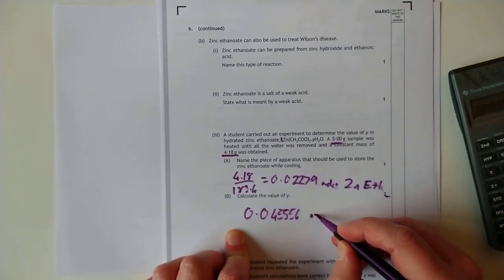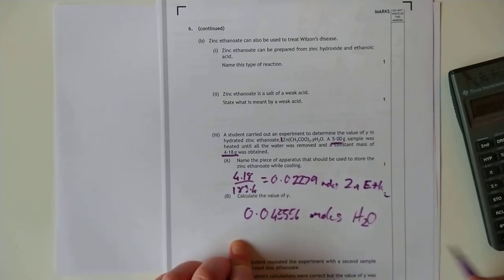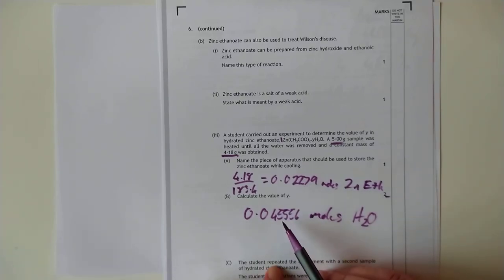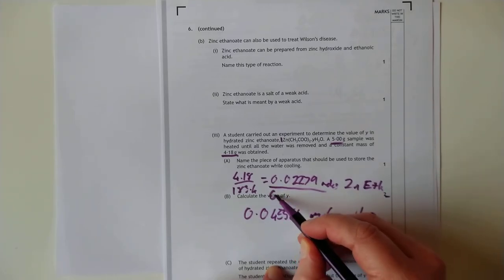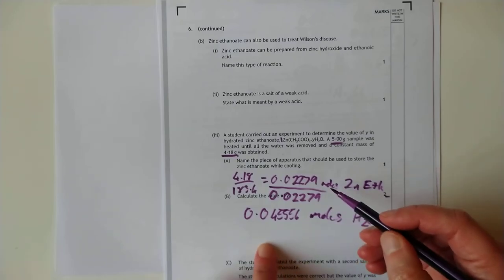That's moles of zinc ethanoate. And that's moles. I need a new pen. This pen is not doing well. So basically what I'm going to do is I'm going to divide them both by 0.2279, because that automatically switches that into 1.